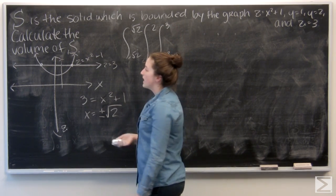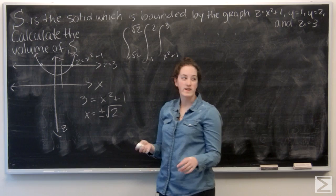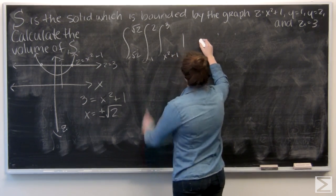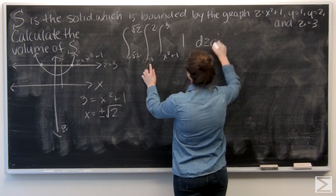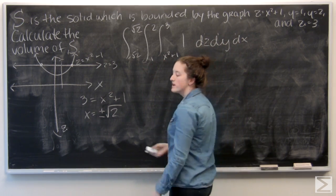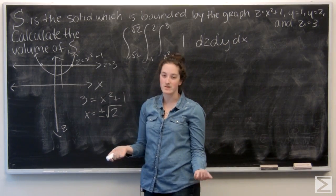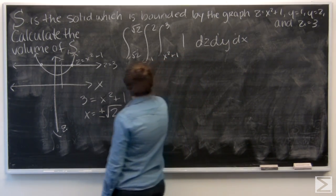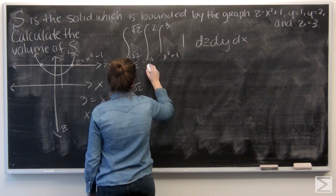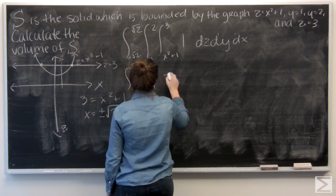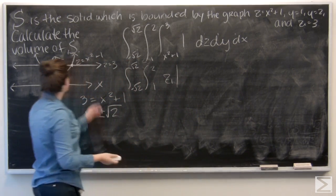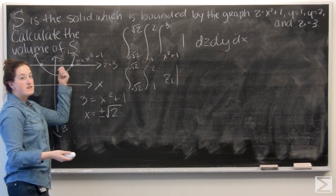And then I'm calculating volume, so I'm just integrating dv, so like 1. So integrating 1 with respect to z is just going to get me z. Let me go ahead and do that. And I want to evaluate z from x squared plus 1 to 3.